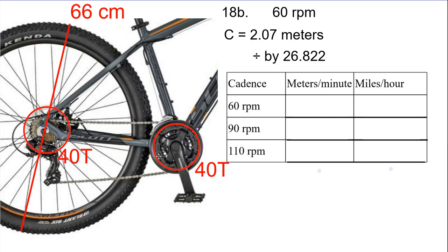For every time we rotate the pedals once, the chain is going to move 40 teeth. So how many rotations would we see in the rear wheel? Well, 40 teeth — which is one full rotation as well. So there would be a one-to-one ratio between the drive gear and the sprocket attached to the rear tire. I set it to 40 and 40 just to make our math a little easier. Once we get our drive ratios, we can multiply that by our cadence.